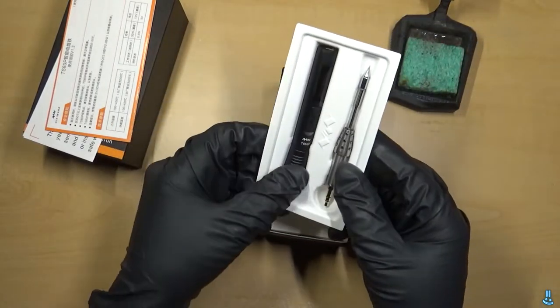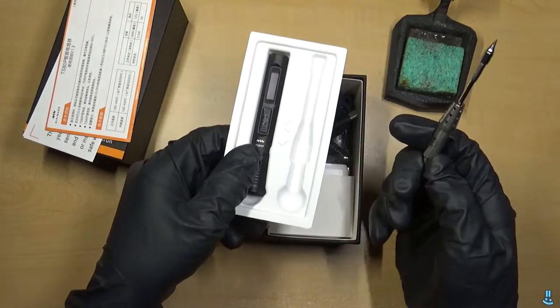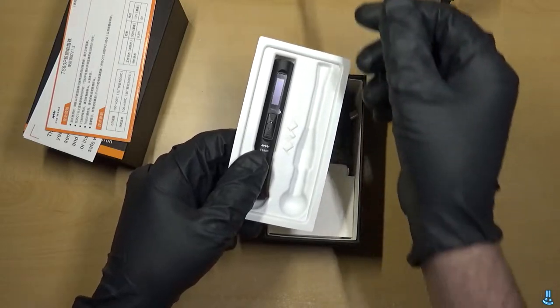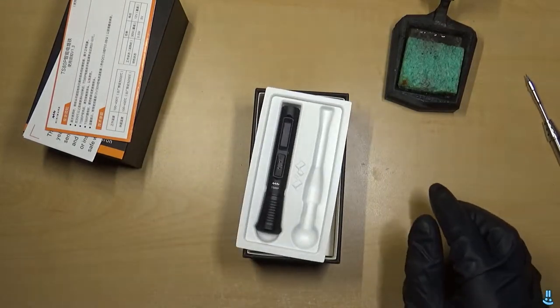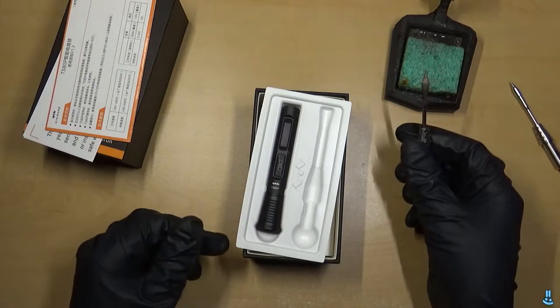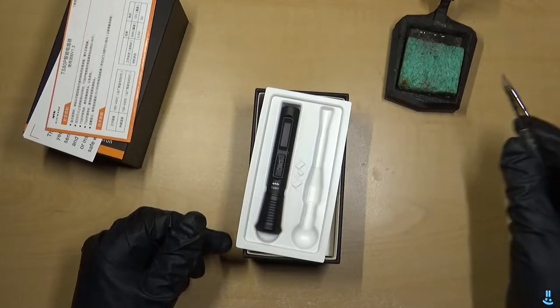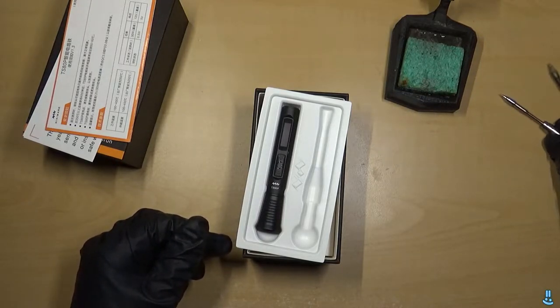So what you get in the box is obviously the iron, the TS-80P iron, and you get a tip with it. Fortunately they send conical tips. Couldn't find anything for a wedge but that's okay. We'll make it work. And I'm actually for this I'm going to use my old tip which is from the original TS-80 that I bought. I might as well use this one up before I use the new one.